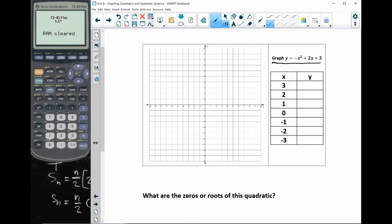Graph y equals negative x squared plus 2x plus 3. Now remember that we can use the graphing calculator to make it really easy to fill in our table of numbers. So how do we do that? Well, just like last lesson, I'm going to press y equals, and it'll bring up a screen that looks something like this.